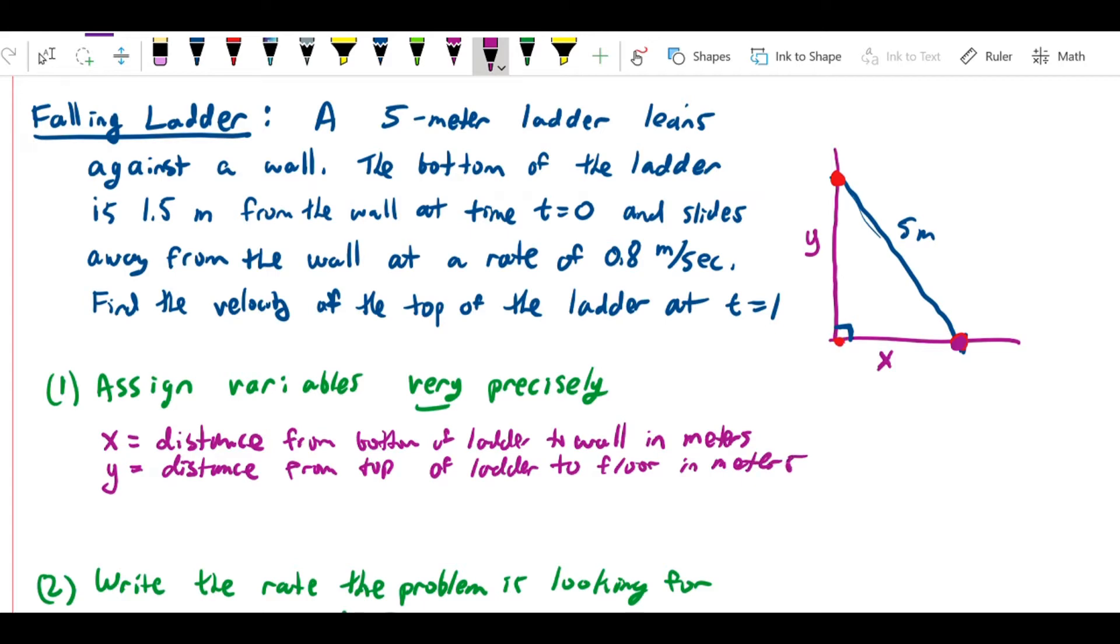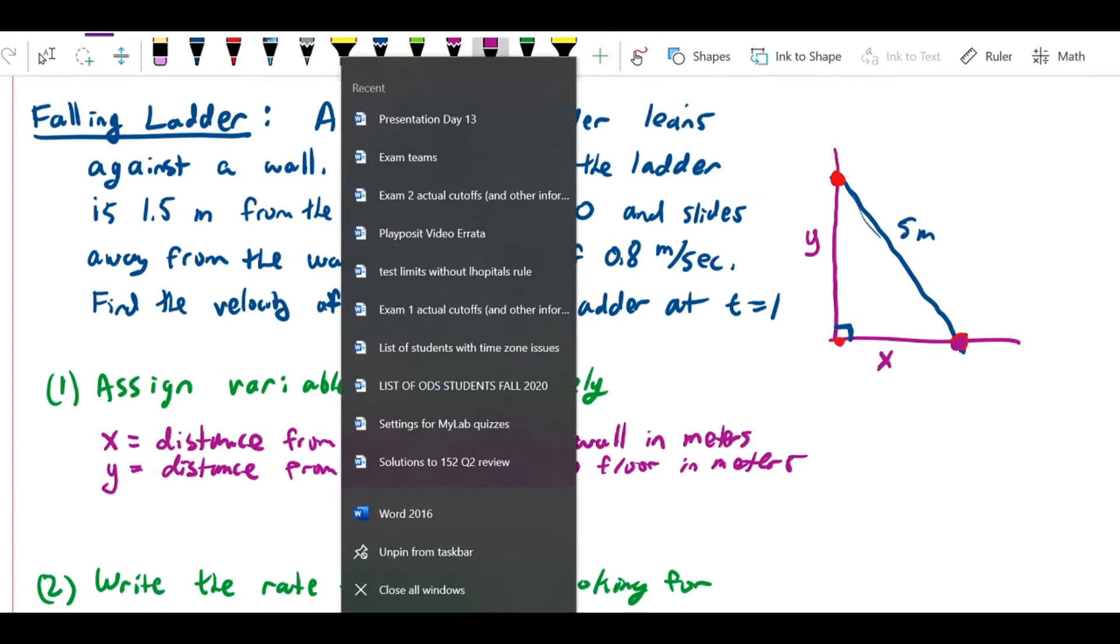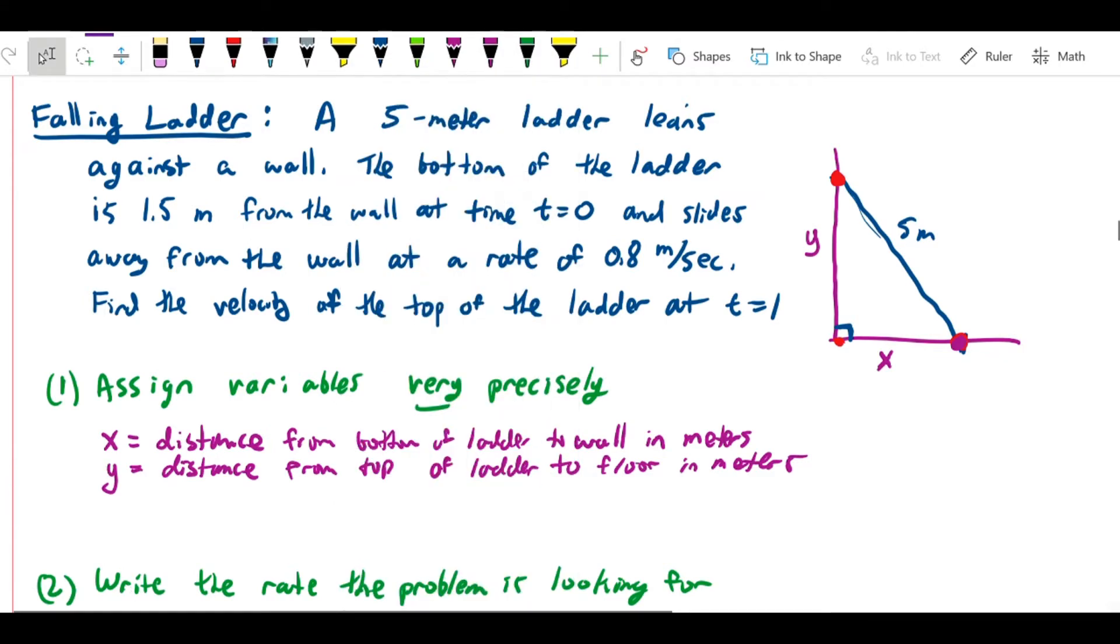The next variable we want is, of course, time. We want t for time. It's not just time, but it's time in seconds. How do I know it's seconds? Because that's the unit of time we're given in the problem.